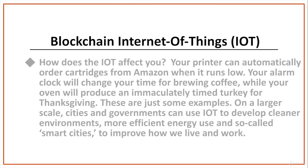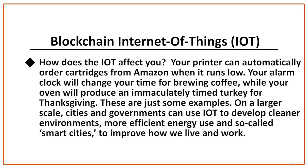But how does the IoT affect you? Well, your printer can automatically order cartridges from Amazon when it runs low, and your alarm clock will adjust your time for brewing coffee, while your oven will produce an automatically timed turkey for Thanksgiving. On a large scale, cities and governments can use IoT to develop a cleaner environment, more efficient energy use, and so-called smart cities to improve how we live and work.